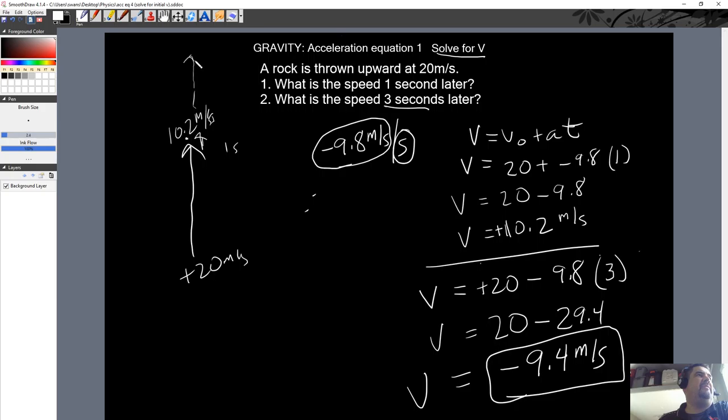But we do know, and they didn't ask us that, at one point it actually slows down to zero. It gets really slow and stops, then heads back and goes faster and faster and faster. In fact, if you wait three seconds total, the speed will be negative 9.4 meters per second.